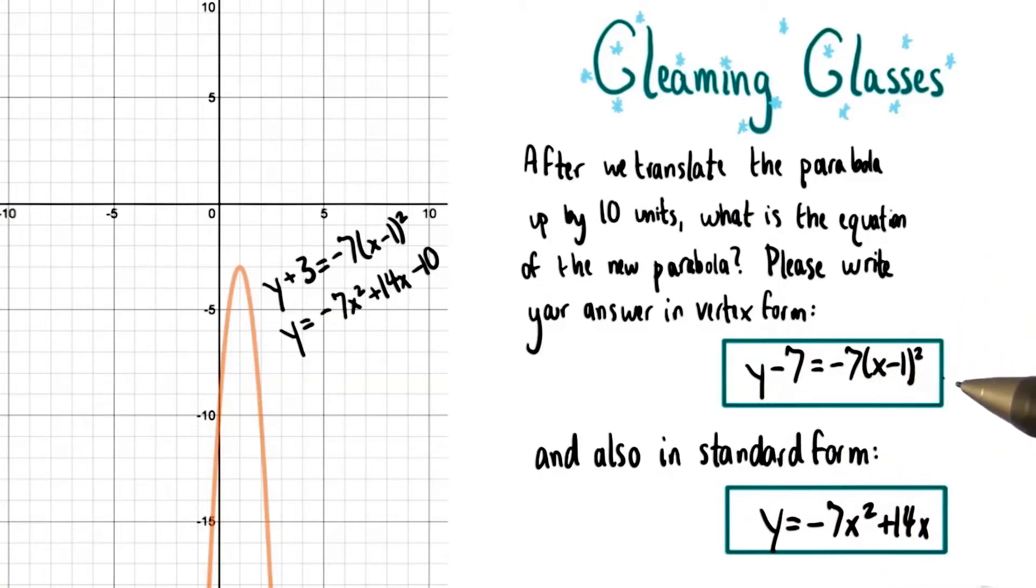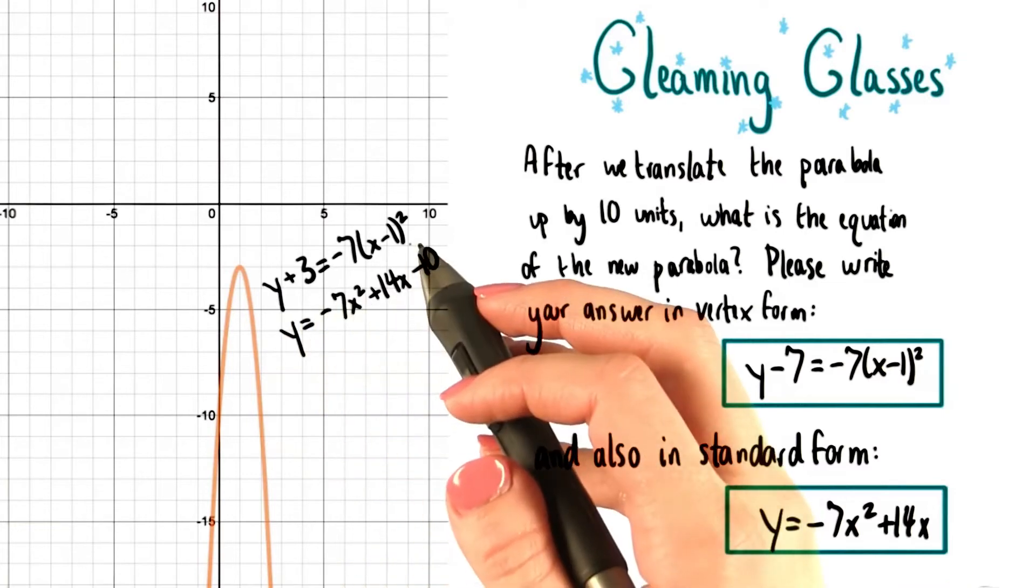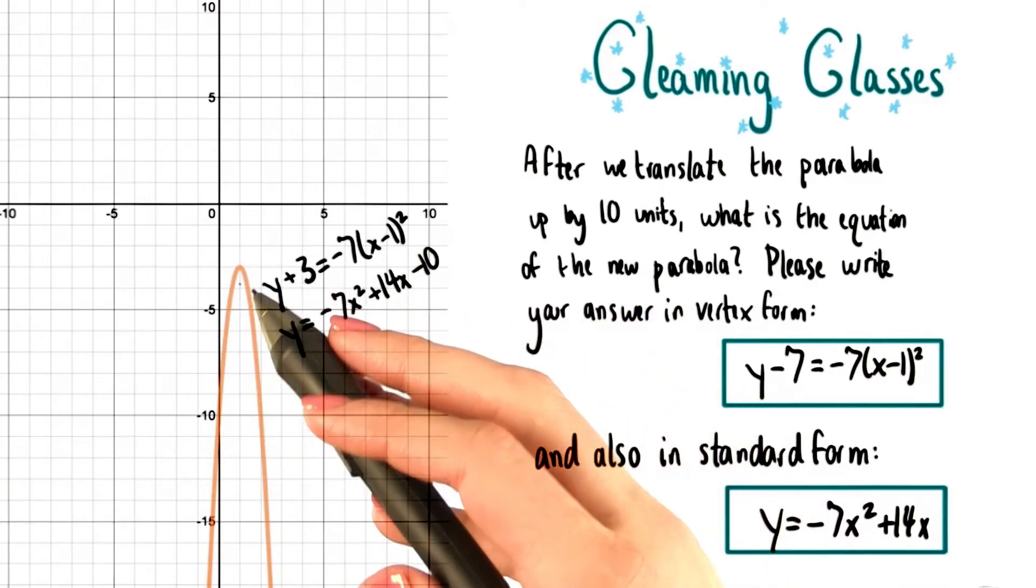All we need to do to get our equation for a new parabola in vertex form is to look at the old equation in vertex form and then shift the vertex up by 10.